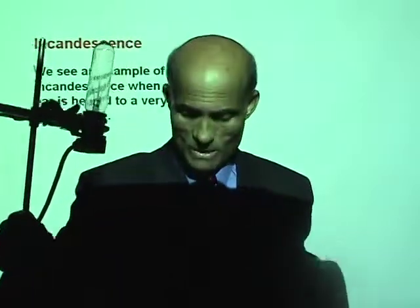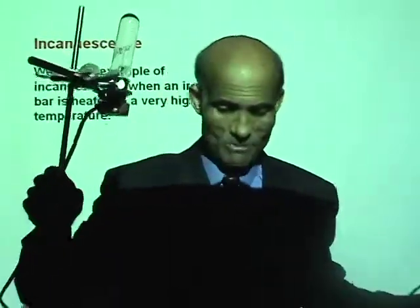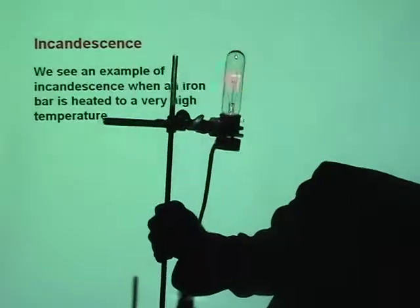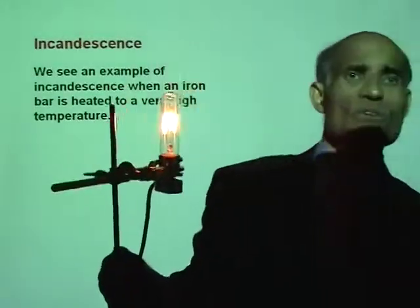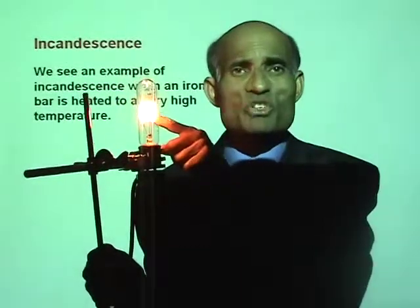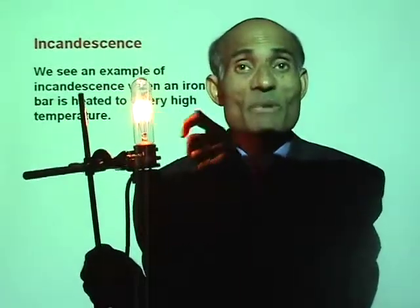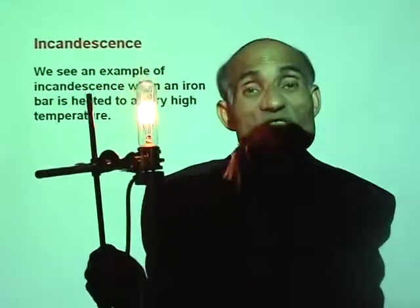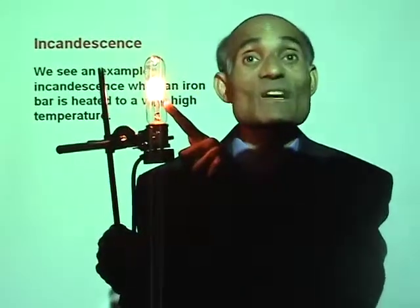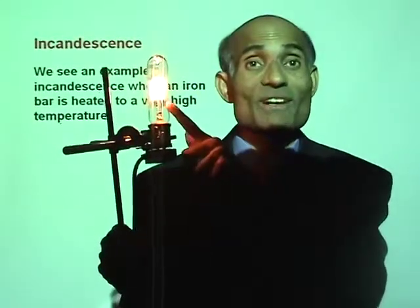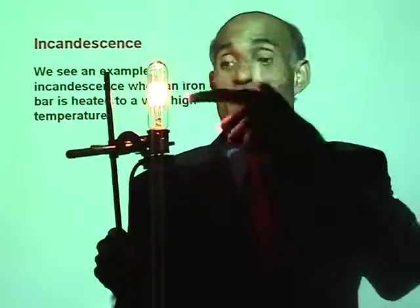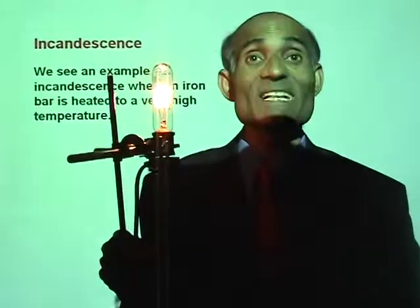You see a bulb here, a filament bulb. If I turn it on, what will happen? You can see what happened here — the electricity passing through the filament has heated it to about 5,000 degrees Celsius, and this is now producing light. This is incandescence.